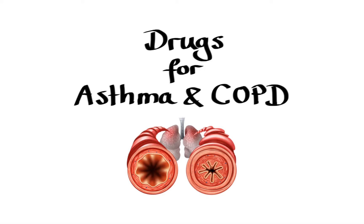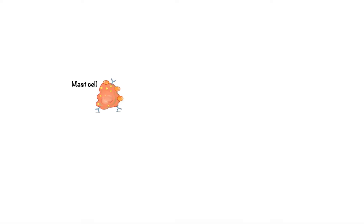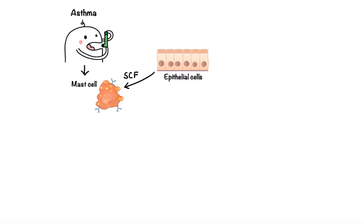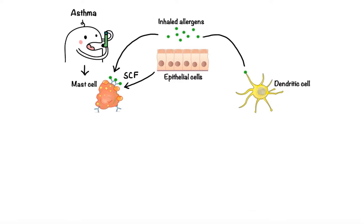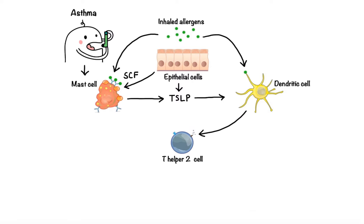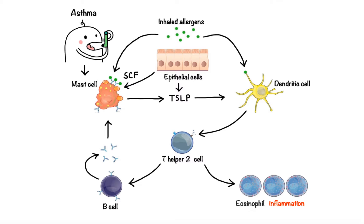Mast cells play a key role in the pathophysiology of asthma and are abundant in the airways of asthmatic patients. They are orchestrated by several interacting cytokines, one of which is stem cell factor, released by epithelial cells upon encounter with inhaled allergens. Inhaled allergens activate sensitized mast cells by cross-linking surface-bound IgE molecules to release various bronchoconstrictor mediators. The allergens are also processed by dendritic cells, which are conditioned by thymic stromal lymphopoietin, TSLP for short, secreted by epithelial and mast cells to release several chemokines that attract T-Helper 2 cells. These T-Helper cells in turn induce B cells to produce and secrete IgE antibodies that sensitize mast cells, induce eosinophil-mediated inflammation, and stimulate mast cell proliferation.